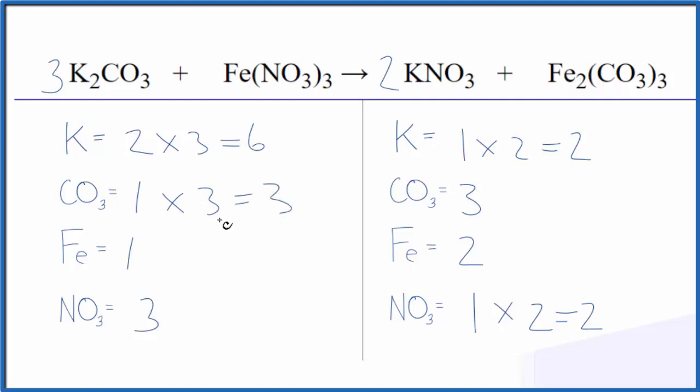That's okay, though. We could go and balance the irons next. If we put a two in front of the iron three nitrate, we have one times two, that equals two of those. And then we need to multiply the nitrates by two. We have one nitrate times three—three nitrates times two—six nitrates.